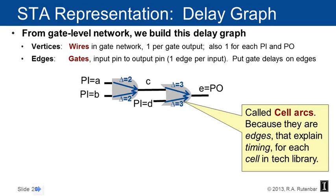What's very interesting about the delay graph is that the nodes are the wires in the gate level network — the gates don't make the nodes. The gates actually make the edges. This makes sense because the delays happen from input pins to output pins, from wires to wires. So we represent the nodes of the graph as the wires, and the cell arcs — the delays — are the edges.